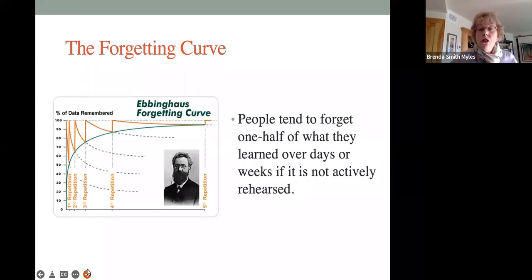And then also we don't take into account something called the forgetting curve. Now, research shows that when we teach something to someone, that that person is likely to forget at least half of what they have learned, unless they actively practice that skill. Now, what happens in our current system? Well, we teach a skill, the child masters it, we move on. Unless we go back and revisit that skill, the child may not have that skill in his repertoire.